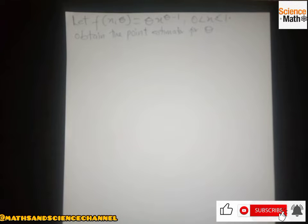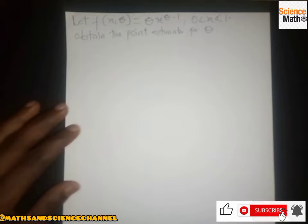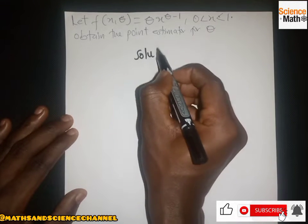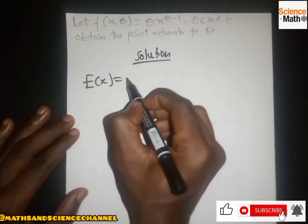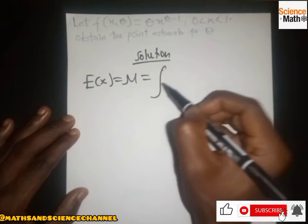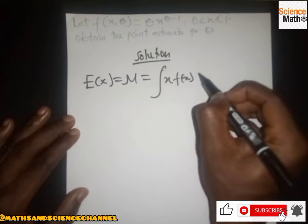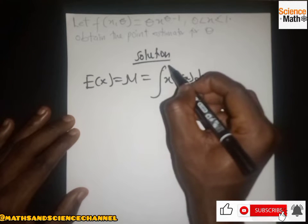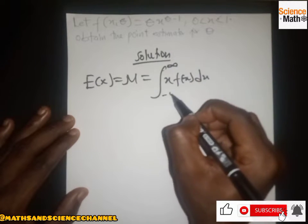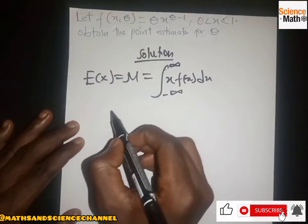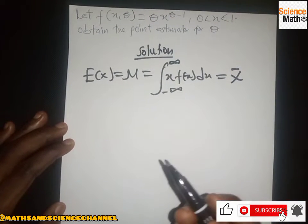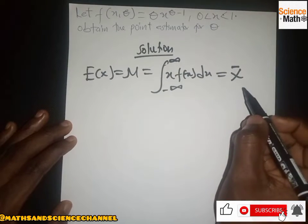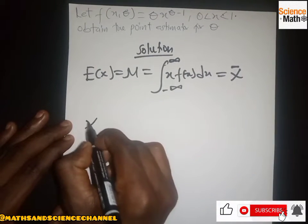In this case, this is a continuous variable, so we are going to use the continuous variable formula. We have E[X] equal to μ, which is also equal to the integral of x·f(x)dx. We set this equal to the mean, so the mean will be equal to that integral.